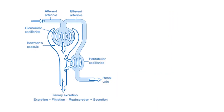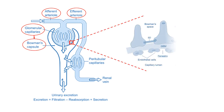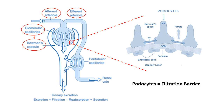Basically, what we have in the kidney is the glomerulus with its afferent and efferent arterioles. Fluids from the glomerulus are collected in Bowman's capsule, which contains special cells called podocytes. Normally, protein cannot be filtered through the glomerulus due to the presence of podocytes.